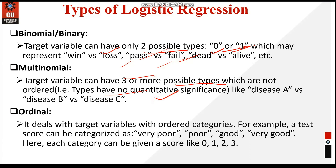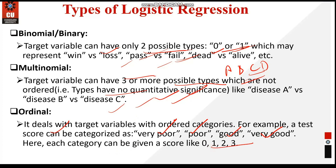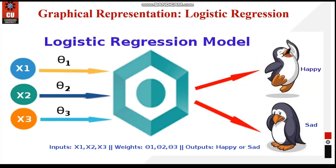In multinomial logistic regression there is no quantitative significance or order — for example, categories like grade A, B, C, D. In ordinal logistic regression, there is a particular order, such as very poor, poor, good, very good, or scores like 0, 1, 2, 3, 4, and so on. This is how logistic regression is categorized into different types.